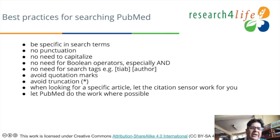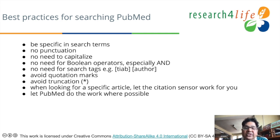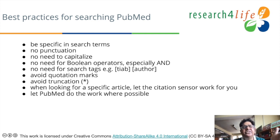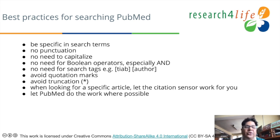PubMed allows you to search different fields — authors, titles, journals, and more. You can search by the author's name, the title of the journal, and keywords. You can also search using quotation marks for exact phrase searching.